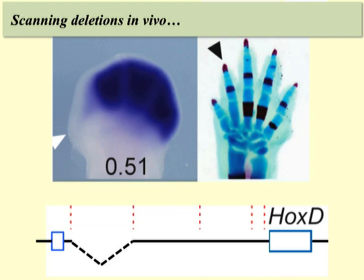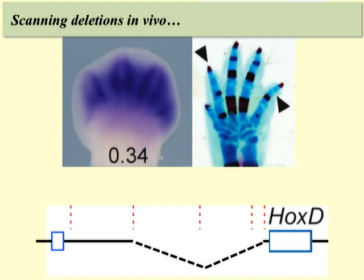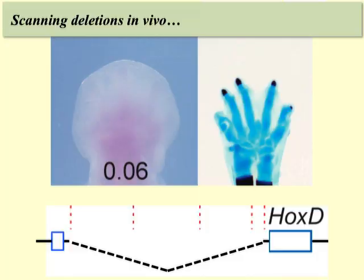When we start to combine these deletions, expression goes down accordingly and the defect becomes stronger. Finally, when the entire gene desert is removed, transcription of these genes in digits is virtually abolished.